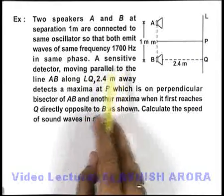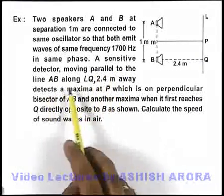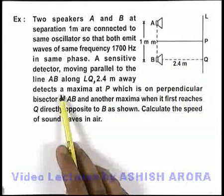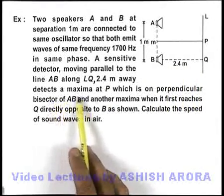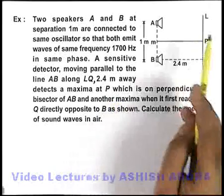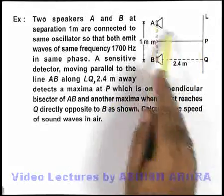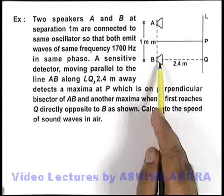A sensitive detector moving parallel to the line AB along line LQ, which is 2.4 meter away, detects a maxima at point P, which is on the perpendicular bisector. As we already know at point P, the path difference for the 2 waves should be equal to zero.